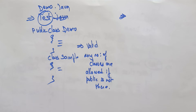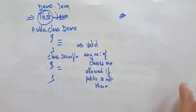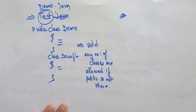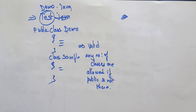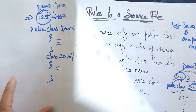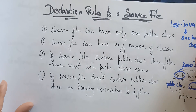I hope you have clarity on the declaration rules for a source file — when to use the class name as the file name and when you can use your own name. Writing programs using Notepad is better for beginners. Try to run those programs by right-clicking and running as administrator, so you can save programs anywhere on your system.